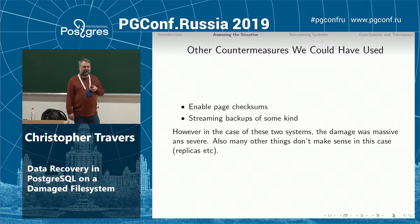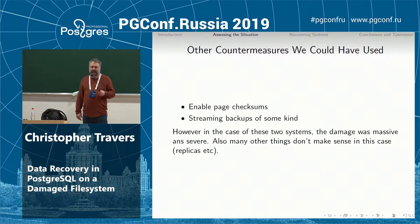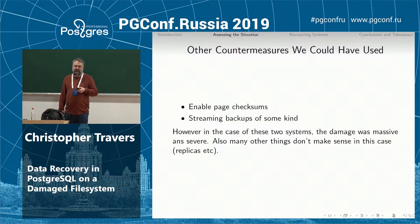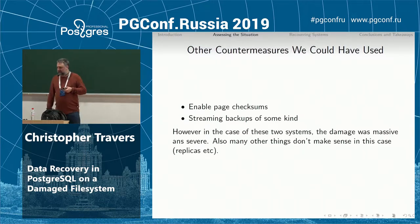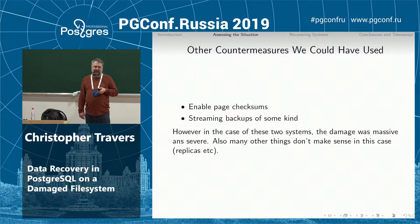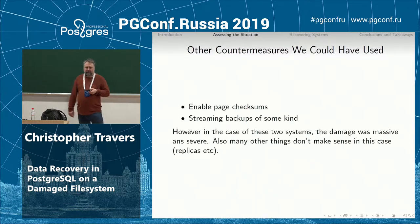There are two countermeasures that might have been helpful. First, streaming backups — we're working on a logical version of that. Second, if we'd had page checksums enabled, we would have had more confidence that the data on the rest of the system was usable and might have caught the problem earlier.